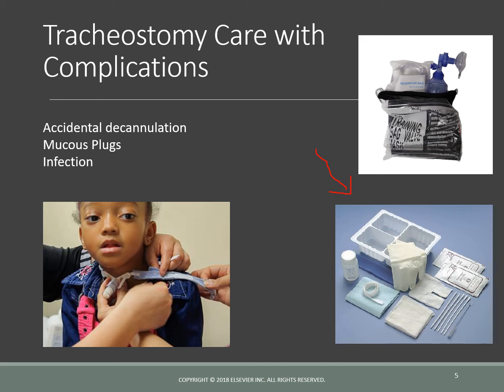You are going to change the trach ties when they are soiled — apply the new ones first, then take off the old ones. Notice here that there are actually two people doing this, because one person is holding and supporting the trach. There is nothing worse than having one tie undone while you're switching, and then the patient coughs. Without counter pressure from a helper, that trach is going to fly across the bed. So make sure you apply the new ones, and after it's secure, take the old ones off from underneath.